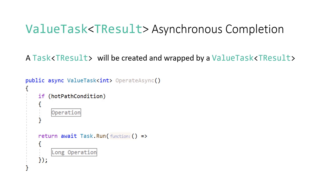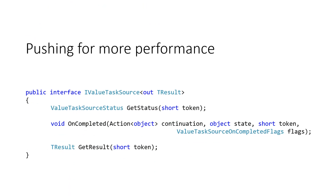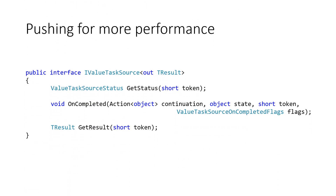The .NET team wanted to improve performance even more, so in .NET Core 2.1 they introduced a new type: IValueTaskSource. Using IValueTaskSource, you can implement your very own caching system. Instead of just returning a Task, you can have an amazing caching system inside your class.